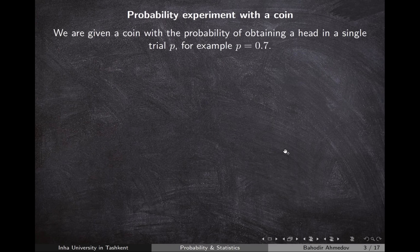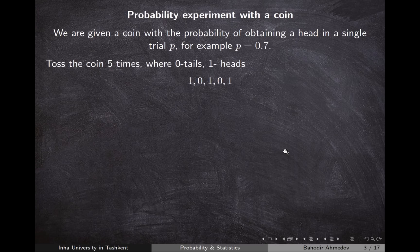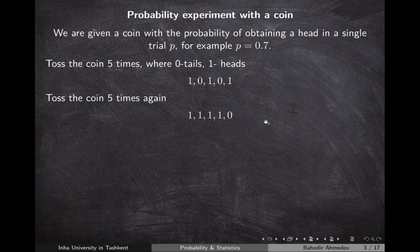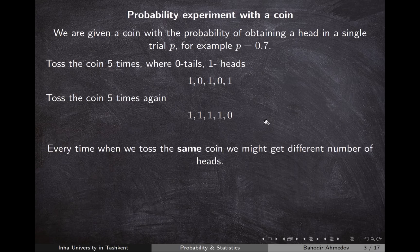Let's start with an example. Say we're given a coin with probability of getting heads p equal to 0.7. I toss this coin five times, where 1 represents heads and 0 represents tails in a single trial. If I toss it again five times, I probably won't get the same result. So in this experiment I'm interested in the number of heads in five tosses.